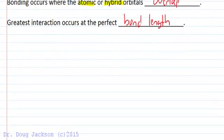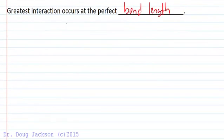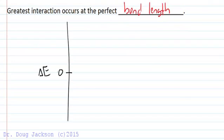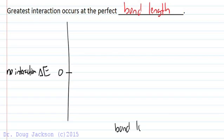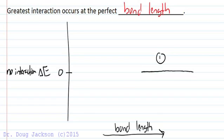We can illustrate that using an energy diagram. If we draw an energy axis, zero change in energy means no interaction at all — delta E equals zero. On the x-axis, we plot bond length increasing to the right. Way out at large distances, two atoms have zero interaction. As they get closer, they have a favorable interaction that maximizes at the bond length.